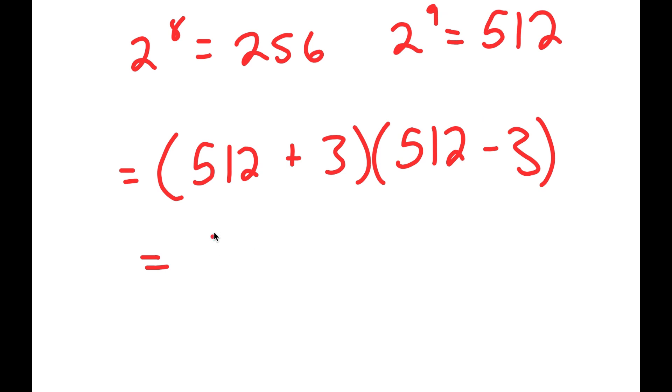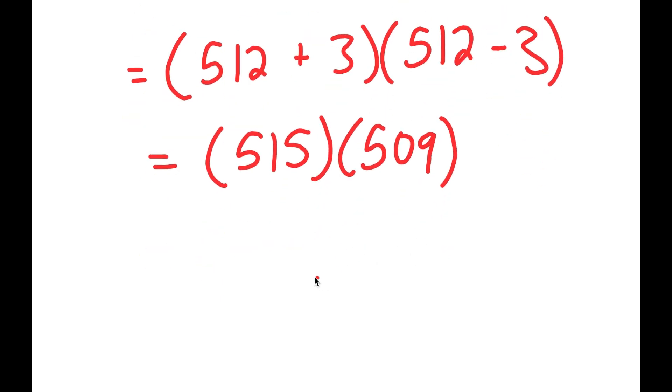And this is equal to 515 times 509. Now, instead of actually solving this like you would with a normal multiplication problem, this is going to take way too long. So there is actually an easier way to solve this. What I'm going to do is rewrite 515 as 500 plus 15 and 509 as 500 plus 9.